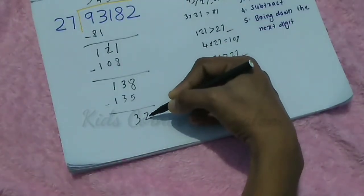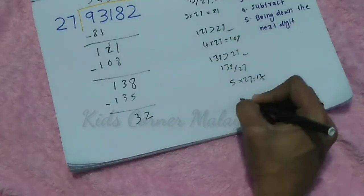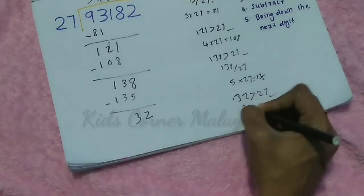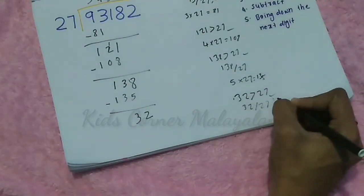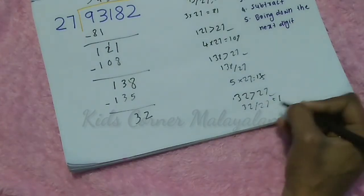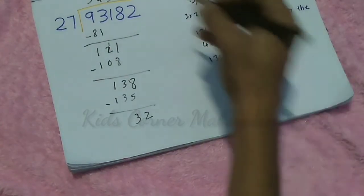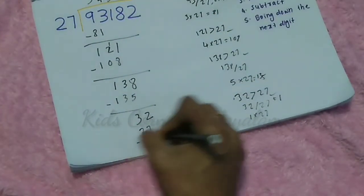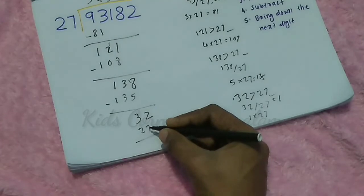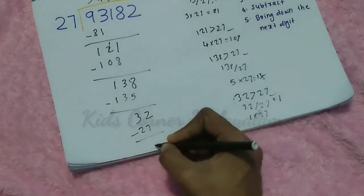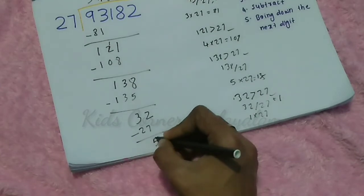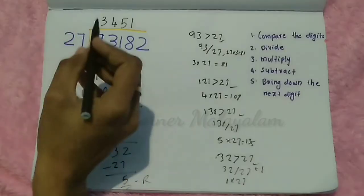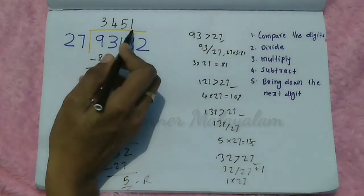Now compare: 32 is greater than 27, correct. So we divide 32 by 27 — that is 1 time. 1 into 27 is 27. Then subtract: 32 minus 27 equals 5. So the remainder is 5, and our final answer is 3451.